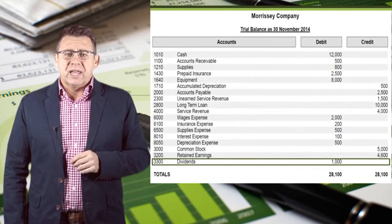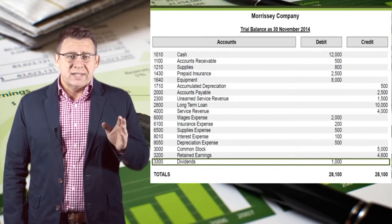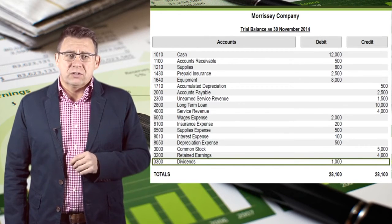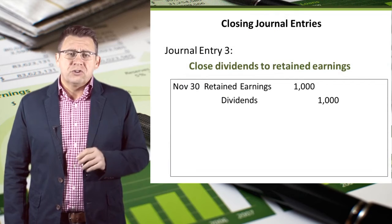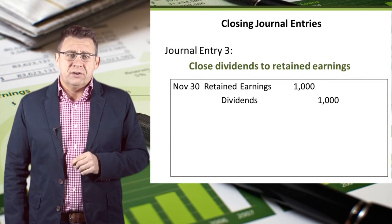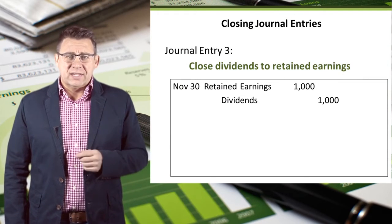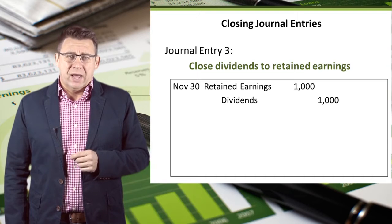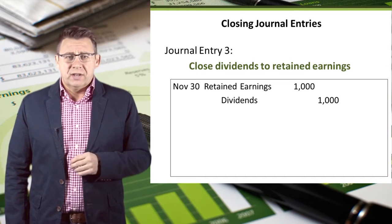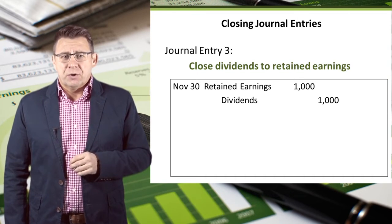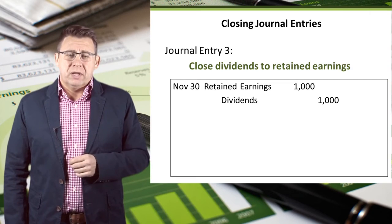The final temporary account is dividends, which has a debit balance of $1,000. The third journal entry is to close dividends to retained earnings. Since dividends have a $1,000 debit balance, we will credit dividends to make the balance zero. Retained earnings will then be debited.